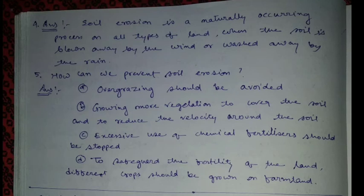Number four: What is soil erosion and write the main causes of soil erosion? Soil erosion is a naturally occurring process on all types of land when the soil is blown away by the wind or washed away by the rain.